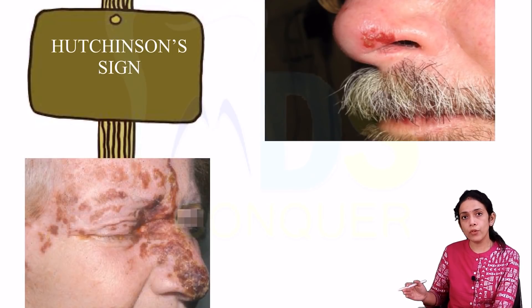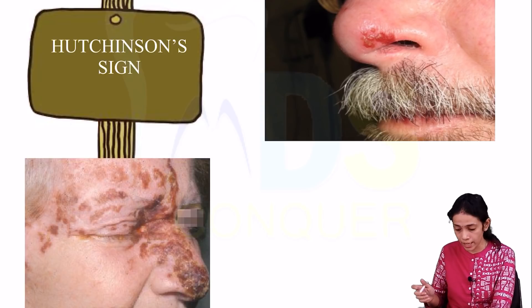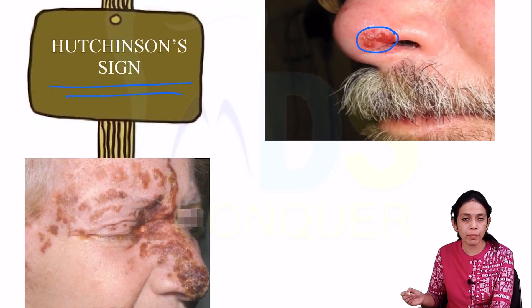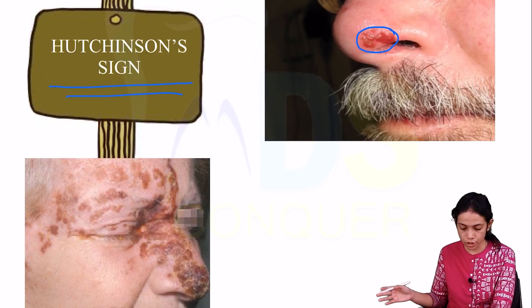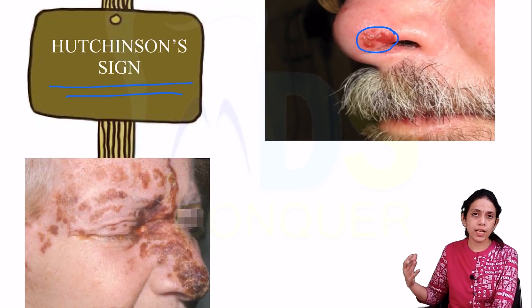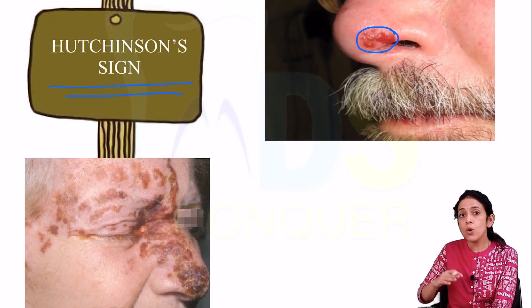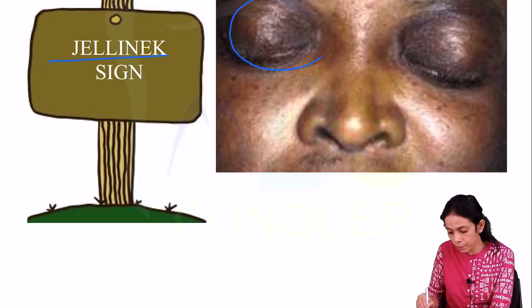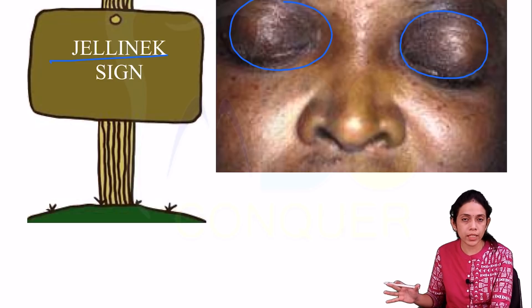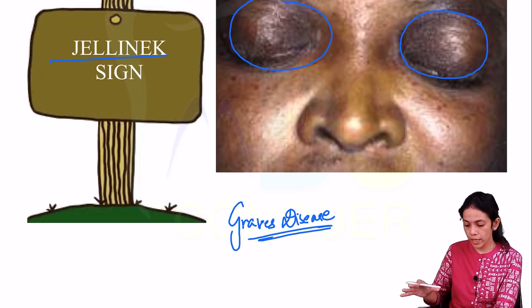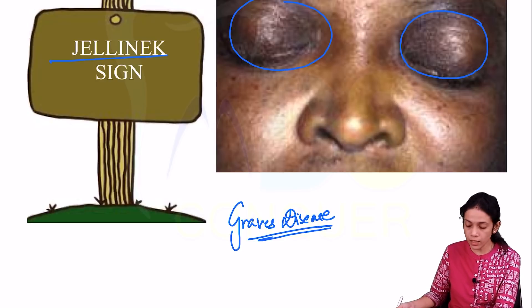Next is the Hutchinson sign, different from Hutchinson's teeth or triad. Here there are vesicles at the tip of the nose and over the ophthalmic division of the trigeminal nerve, preceded by herpes zoster infection, along with an unresponsive pupil. Next is the Jelly Neck sign — hyperpigmented periorbital region in both eyes, seen with Graves' disease.